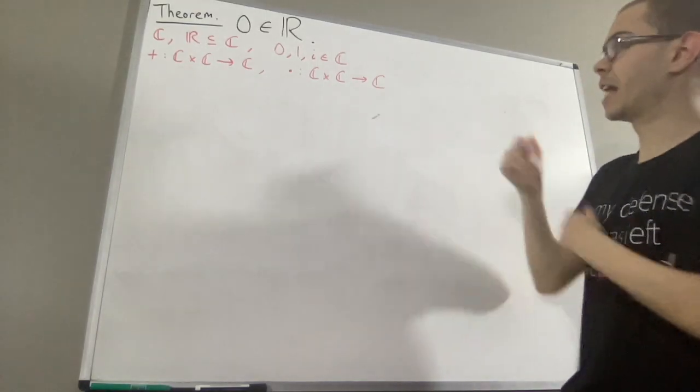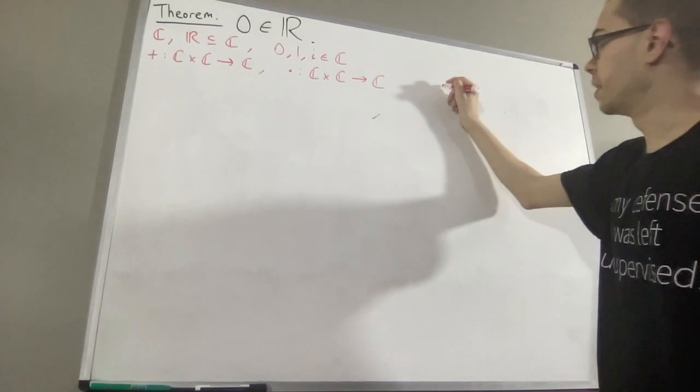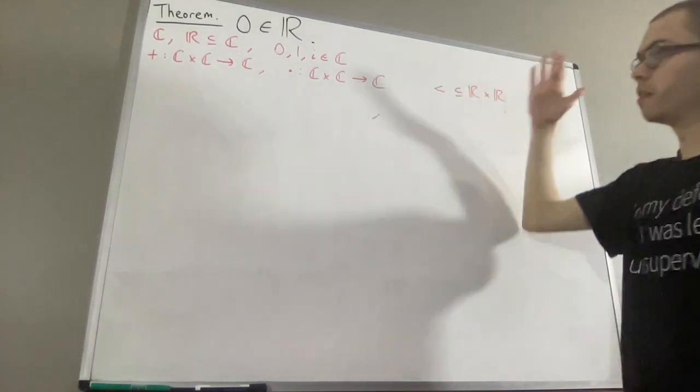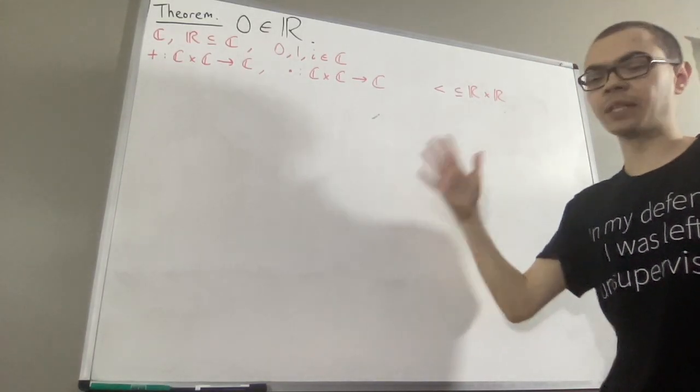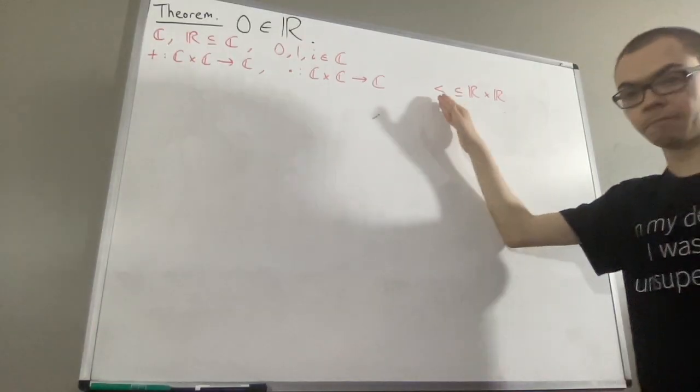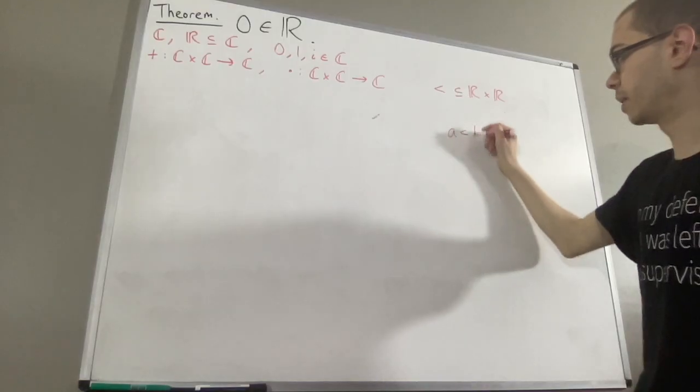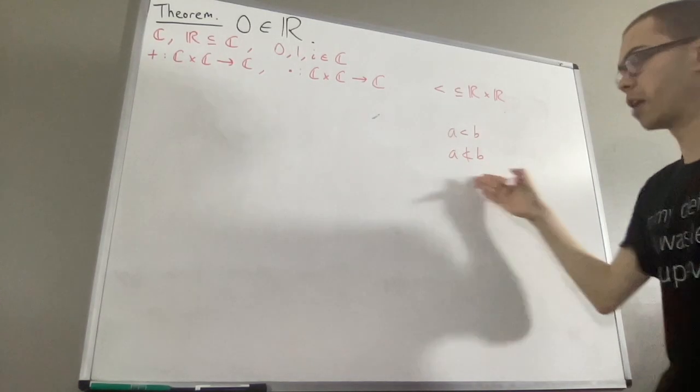And finally, we are given a relation on the set of real numbers called the less than relation. So, given any two real numbers, A and B, it might be the case that A is less than B. Otherwise, A is not less than B.